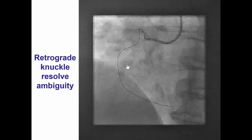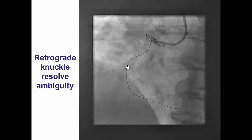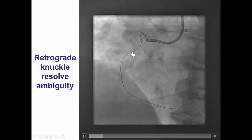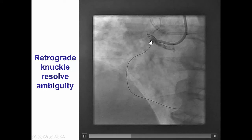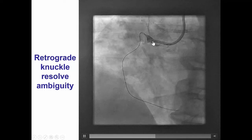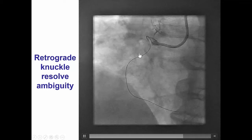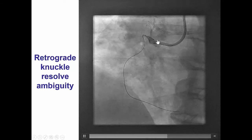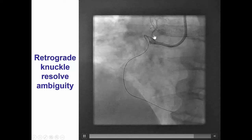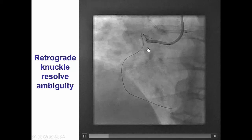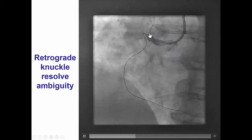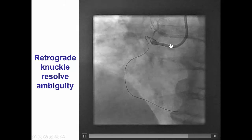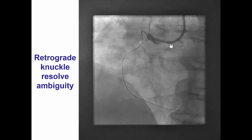To understand the vessel course, we performed retrograde crossing. We were able to go sub-intimal and advance the retrograde knuckled wire all the way to the proximal right coronary artery. This essentially explains why we were unable previously to wire in the antegrade direction — there is a tremendous amount of tortuosity and bends in the proximal right coronary artery that was very hard to understand without having this retrograde knuckled wire.